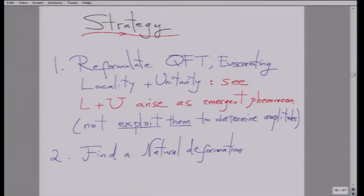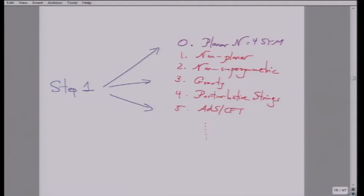Strategy one is reformulation. Strategy two would be to find a natural deformation — the analog of going from the principle of least action to the path integral. Step one divides into step zero, which is already taking a long time: understanding how this works for planar N=4 super-Yang-Mills — the simplest possible theory we can try. Certainly if there's a whiz-bang new way of thinking about things, we had better see it already for N=4 super-Yang-Mills. The danger is that N=4 super-Yang-Mills is so special that what we're seeing is just a mirage — special to N=4 and won't generalize. That's a danger we have to live with for now.